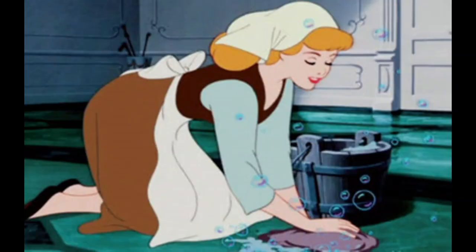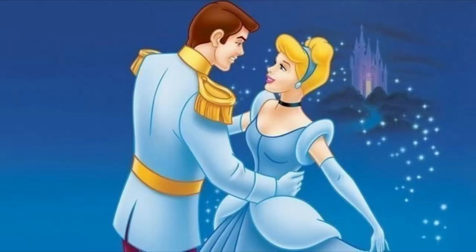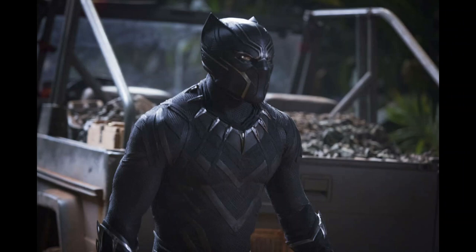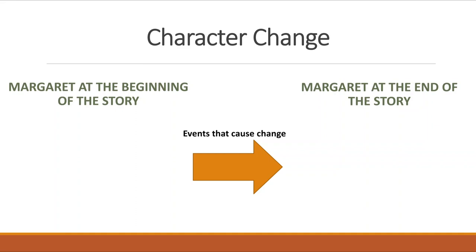In some works of fiction, the change a character goes through can be the most important part of the whole story. This change, and what caused it to happen, can help us see people in a different way, or can convey a meaningful message from the author. When we examine character change, we need to look at three different things: first, what is the character — in this case, Margaret or Ulaman — like at the beginning of the story? Then, what is she like at the end of the story? And what events caused that change?